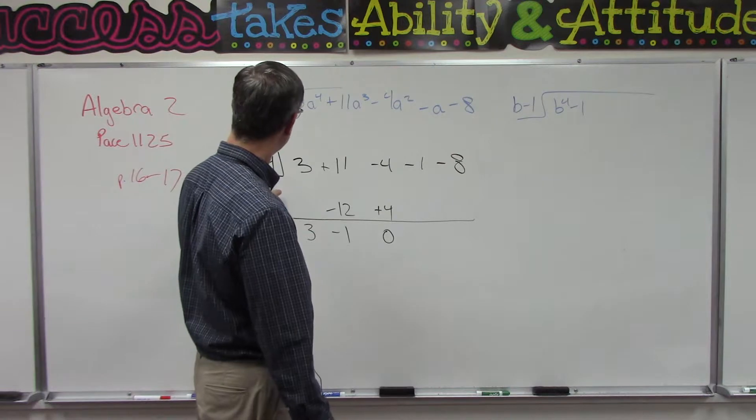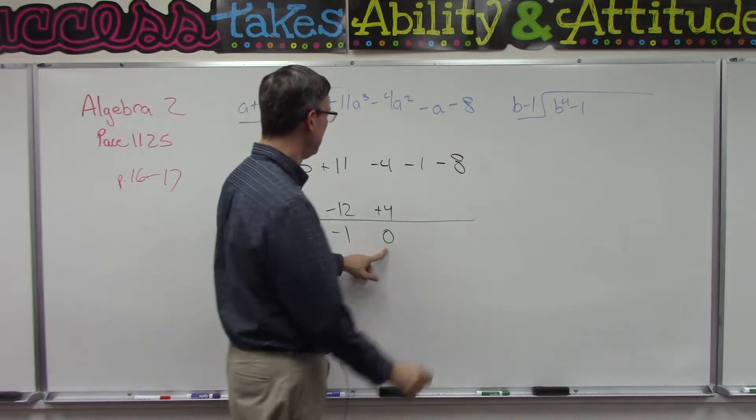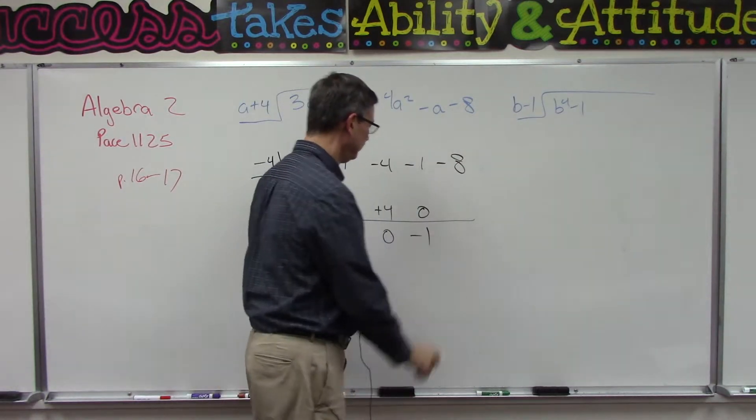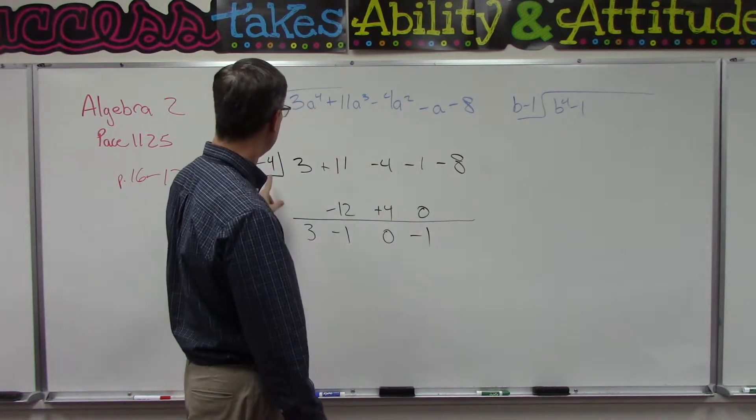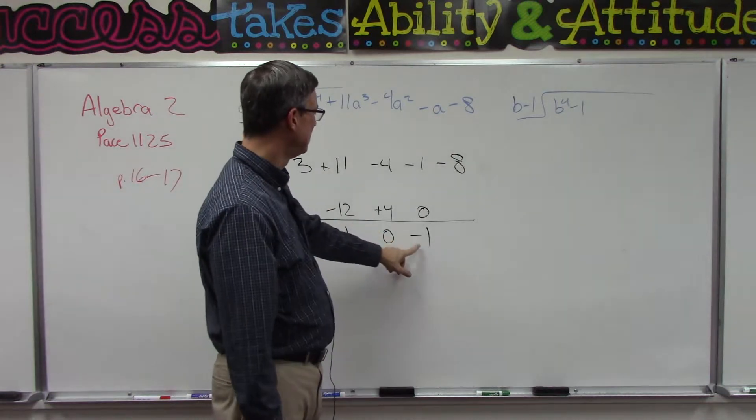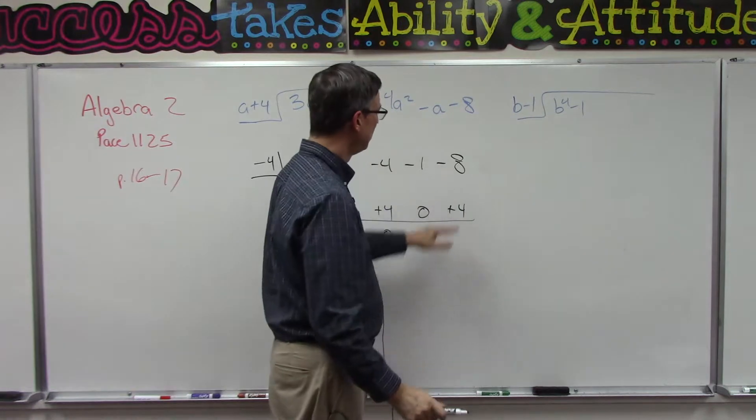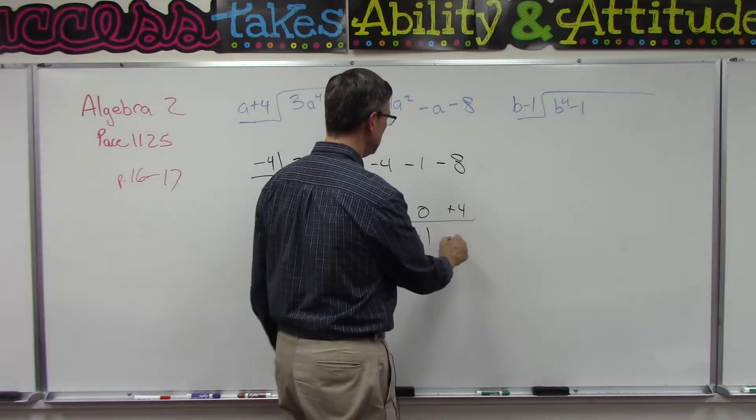Now we take the negative 4 times 0 and we get 0, add and we get negative 1. Take negative 4 times negative 1 and we get positive 4, and then when we add these we get negative 4.